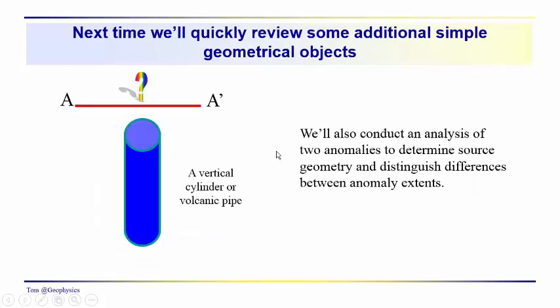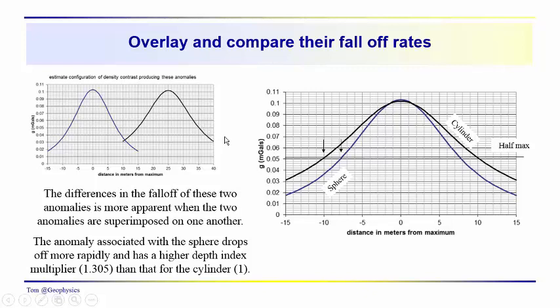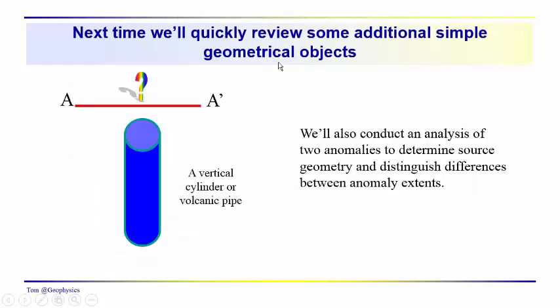So that's the process that one can go through in order to kind of evaluate the anomalies that one has to determine out of possible geometries and you aren't sure which is which, how you might be able to discriminate a little bit more quantitatively between the anomalies that you see, the sources for the anomalies that you see. And that's a point that we wanted to spend a little bit of time on. And then next time we will talk about the vertical cylinder and a couple more objects and then kind of wrap up simple geometrical objects. So, see you next time.